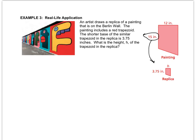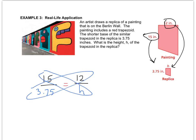And I'll go in this direction. Once you pick your direction, you have to stick with it the whole time. So 15 matches 3.75 the same way that 12 matches the H. So you've got this uncontrollable desire to cross multiply.